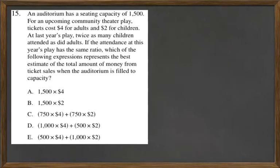Problem 15 lends itself well to multiple choice testing strategies. An auditorium has a seating capacity of 1,500. For an upcoming community theater play, tickets cost $4 for adults and $2 for children.